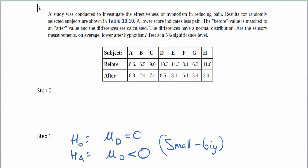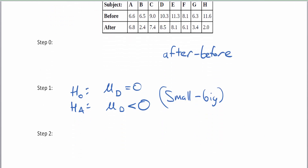Looking at the before numbers, they range roughly from 6.3 to 11.3, and the after numbers look as small as 2.4 and as large as about 8.5. Since the after numbers are smaller, we'll compute after minus before. In step zero we set up the null and alternative, and in step one we decide the order of subtraction — you can flip-flop these two if you'd like.